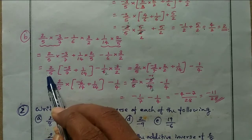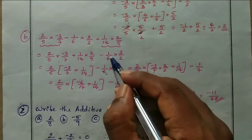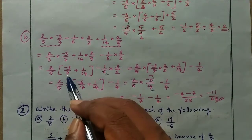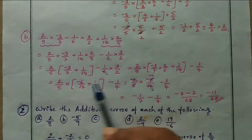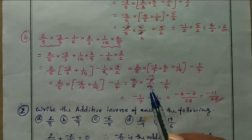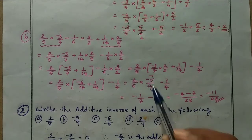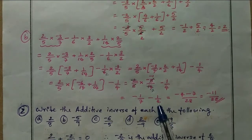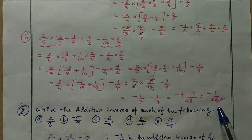Take 2 by 5 outside the bracket, leaving minus 3 by 7 plus 1 by 14, then minus 1 by 6 into 3 by 2: 6 and 3 cancel to give 1 by 4. Denominators of the bracket are not the same, so multiply: 2 into minus 3 gives minus 6 over 14. So minus 6 plus 1 equals minus 5 by 14. Cancel 5 and 14 to get minus 1 by 7. Then minus 1 by 7 minus 1 by 4: gives minus 4 minus 7 over 28, which equals minus 11 by 28.